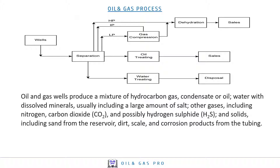Iron gas will produce a mixture of hydrocarbon gas, condensate or oil, water with dissolved minerals usually including a large amount of salt, and other gases including nitrogen, carbon dioxide, and possibly hydrogen sulphide, and solids including sand from the reservoir, dirt scale, and kerosene products from the tubing.